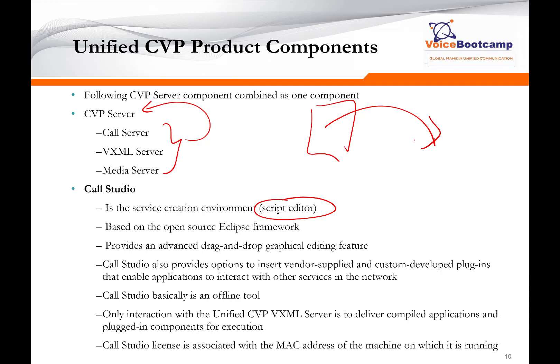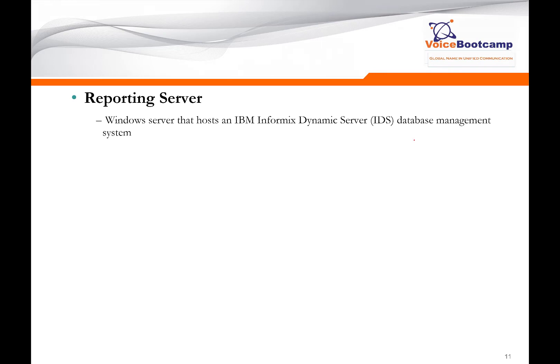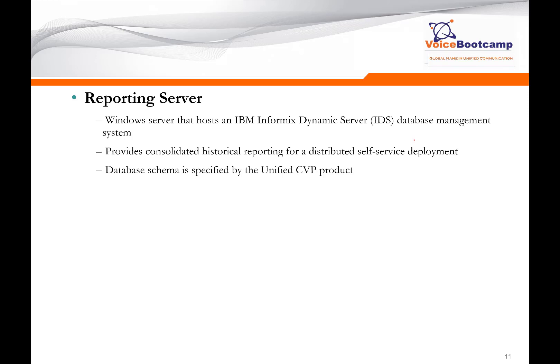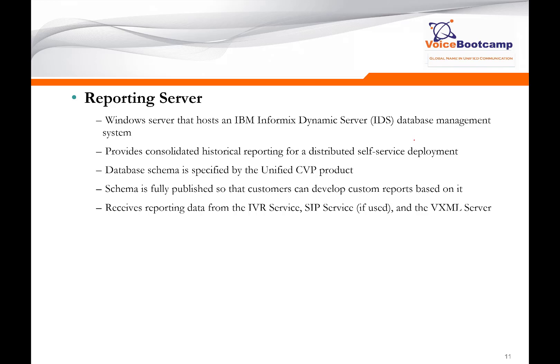Call studio licenses are associated with the MAC address of the machine where it is running. The reporting server is a Windows server that hosts the IBM Informix Dynamic Server database for the management system. It provides consolidated historical reporting for distributed self-service deployment. The database schema is available from Cisco so you can create more advanced or customized reporting. The schema is fully published so customers can develop their own custom reports. The reporting server receives reports from IVR service, SIP service if used, and the VXML server. The reporting server depends on the call server to receive call records, so the call server must be running for the reporting server to receive any records.